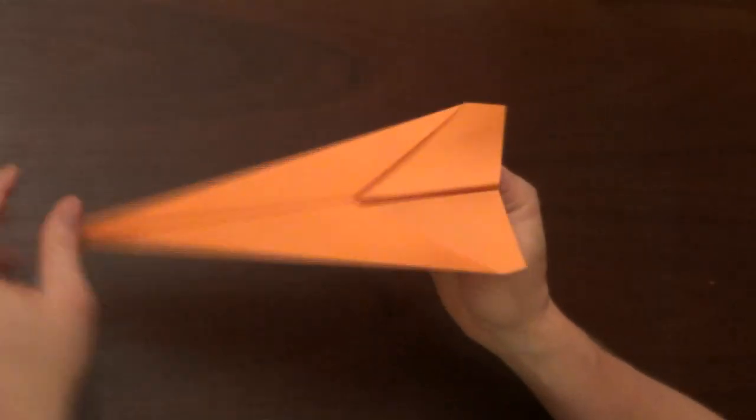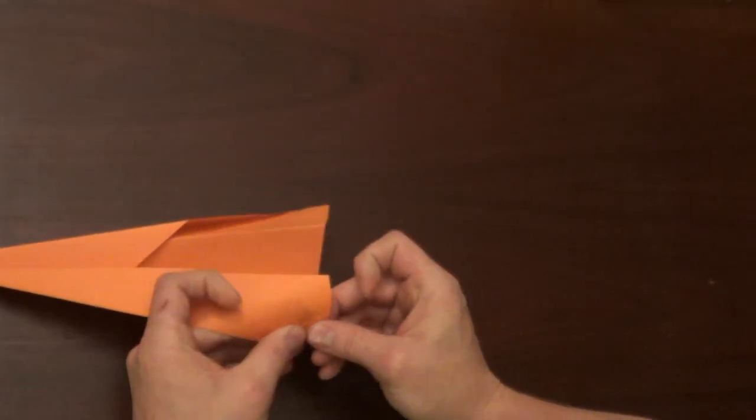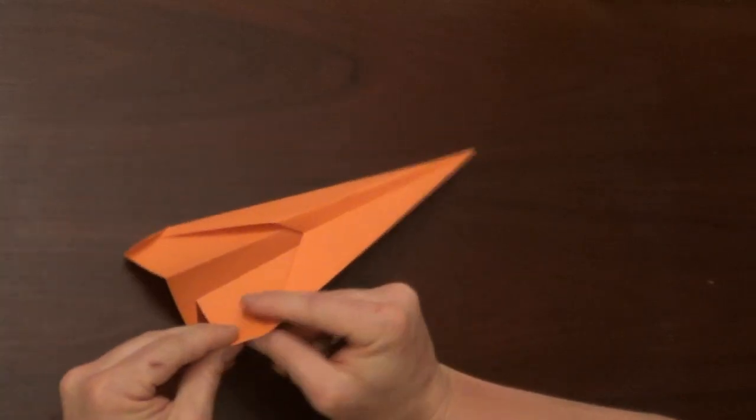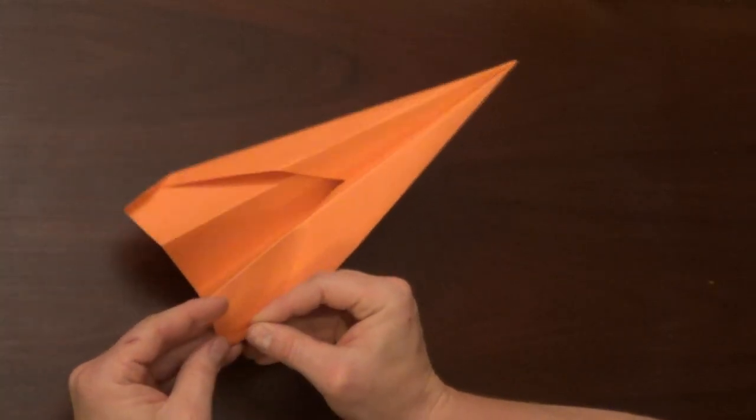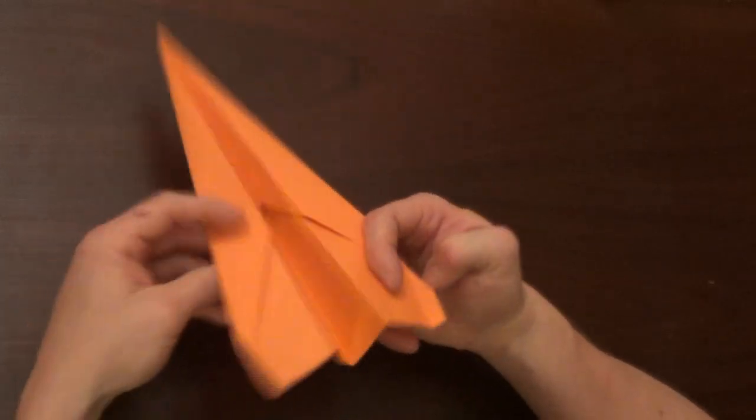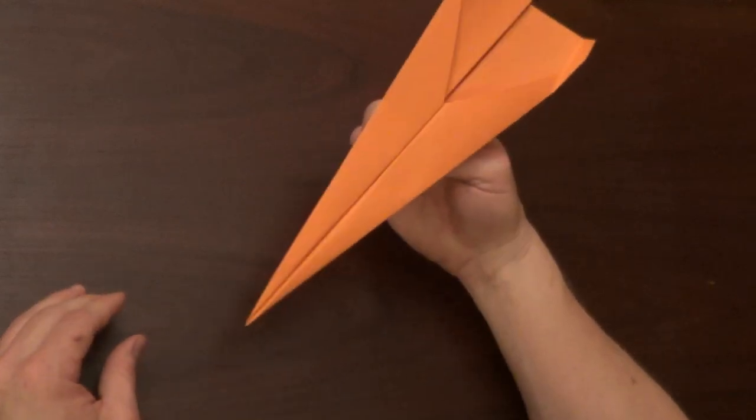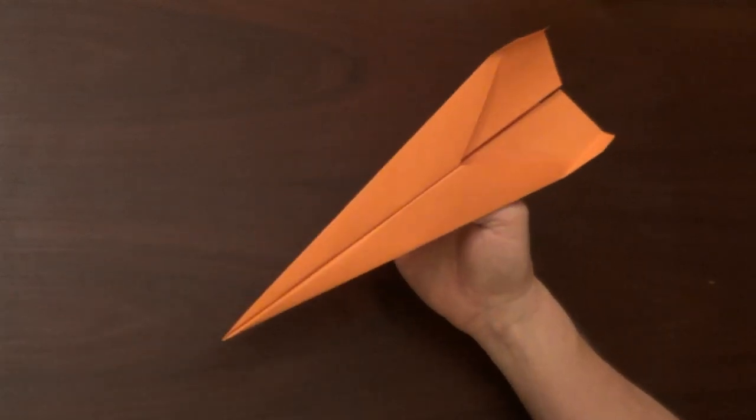Now if you find that this spins on you as you throw it, what you can do is fold up these edges here. Line them up right there in the back, try to keep them even, and that should help it to fly straight. Well, there you have it, the dart.